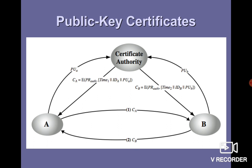A registers their public key, and B also registers their public key. The certificate authority issues a certificate to A, and similarly issues a certificate to B. A and B then exchange their certificates. Whenever A and B want to communicate, they don't need to retrieve the public key from the certificate authority each time, since the corresponding public key is included in the certificate. With this, I am concluding key distribution.